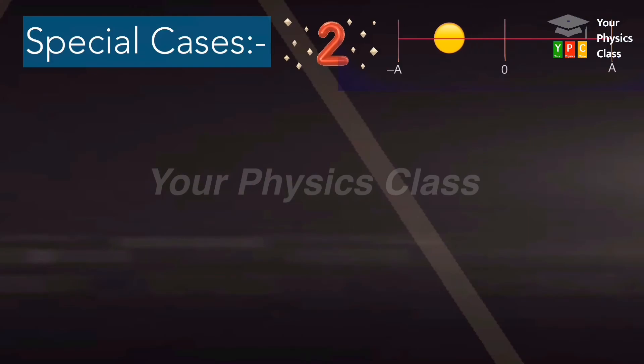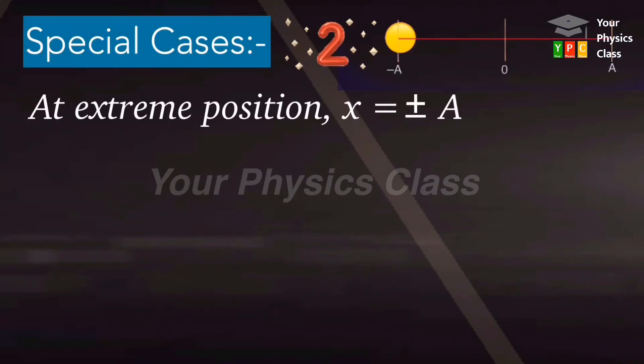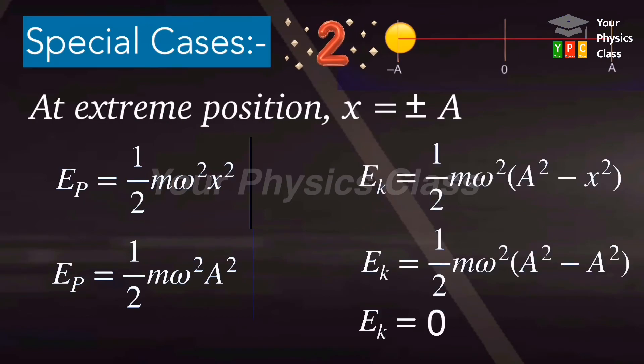Let's talk about the second case, extreme position. At extreme position x equal to plus minus a. On substituting this value in the formula of potential energy we get maximum potential energy which is equal to total energy and kinetic energy is zero. So you may say that here total energy is purely potential.